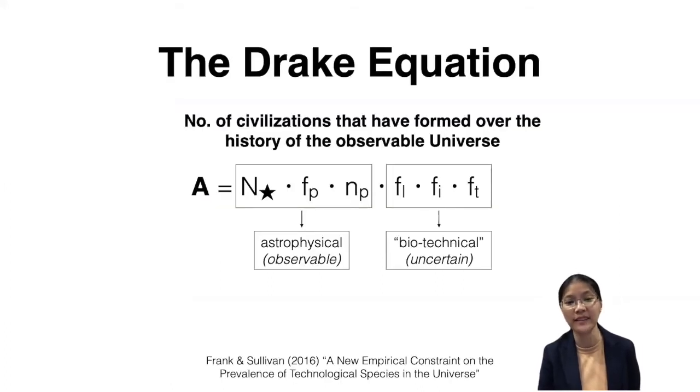We've gone over the Drake Equation and the different factors that make it up, and in this final part of the lecture we will bring all of this together and look at some implications for the future of our own civilization.